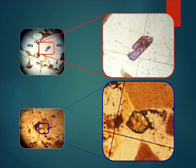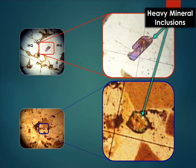This last example shows some examples of heavy mineral inclusions, taken from similar thin sections in similar outcrops with all kinds of deformed rocks.